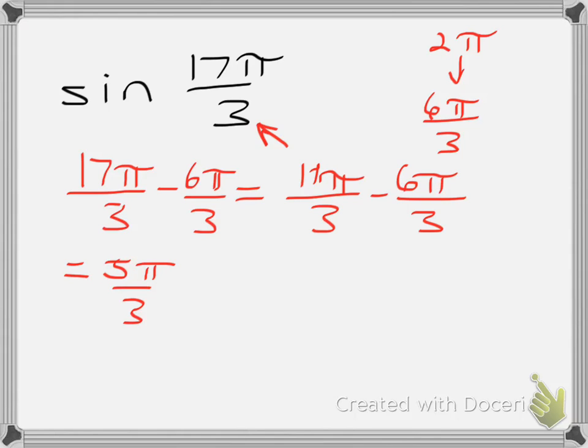So we're saying 17 pi over 3 is equivalent to saying what is sine of 5 pi over 3. Now like the previous one, we want an exact value. So let's return to our reference angle first.